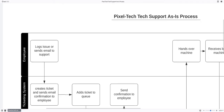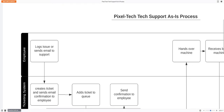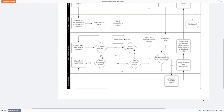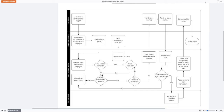This is the tech support 'as-is' process. It's good to model what you see right now before modeling improvements. I've used swim lanes to identify who is doing what and when, and how the process moves from one person or system to the next. The process starts with the employee — in the employee swim lane they log the issue or send an email to support. That kicks off the ticketing system, which creates a ticket, sends an email confirmation back to the employee, and adds the ticket to the queue.